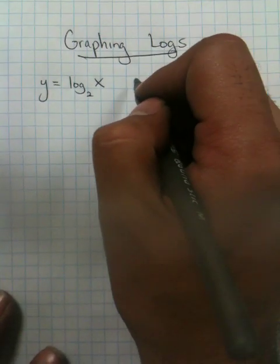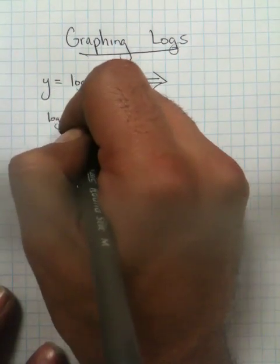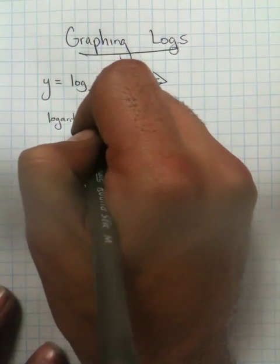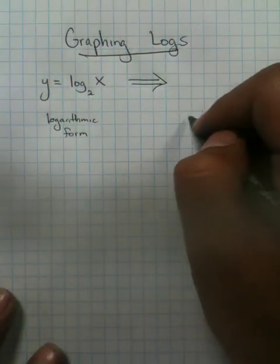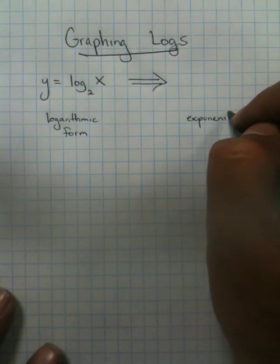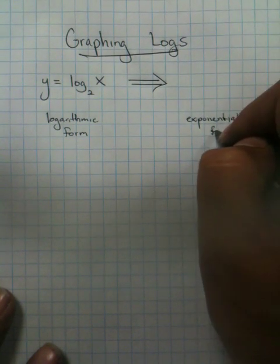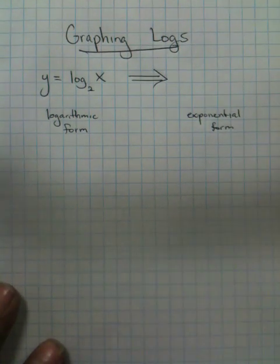To graph a log, what you want to do is go between logarithmic form to exponential form. This is a technique I've used and I call it Maoa.